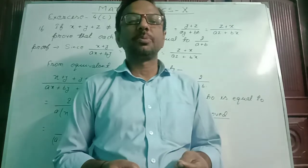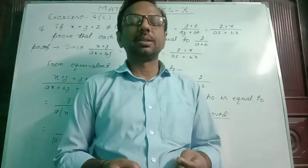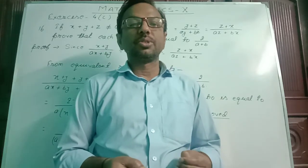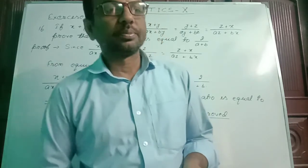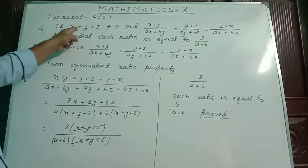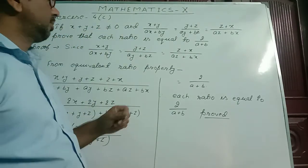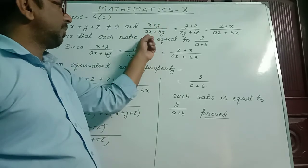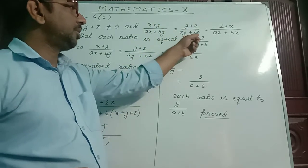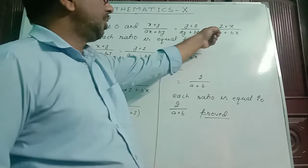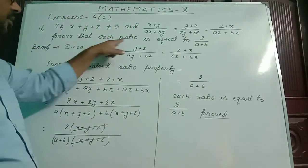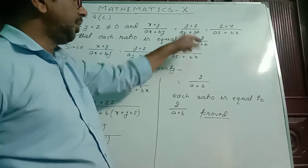In the students of class 10, in this period of mathematics, we are solving exercise 4C of ratio and proportion. Question number 16. The question is: if x plus y plus z is not equal to 0, and x plus y by ax plus by equals y plus z by ay plus bz equals z plus x by az plus bx. Prove that each ratio is equal to 2 by a plus b.